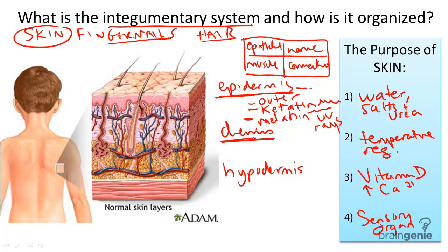Melanin protects the inner layers from the damaging effects of UV rays from the sun. Moving on, the dermis is the middle layer of the skin — it's a much thicker layer. This layer consists of sweat glands, hair follicles, nerves, and blood vessels.